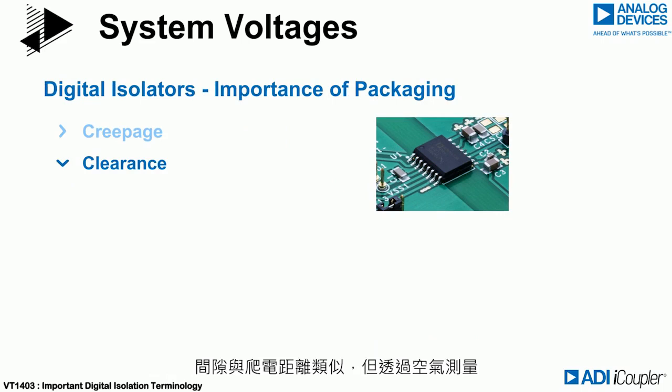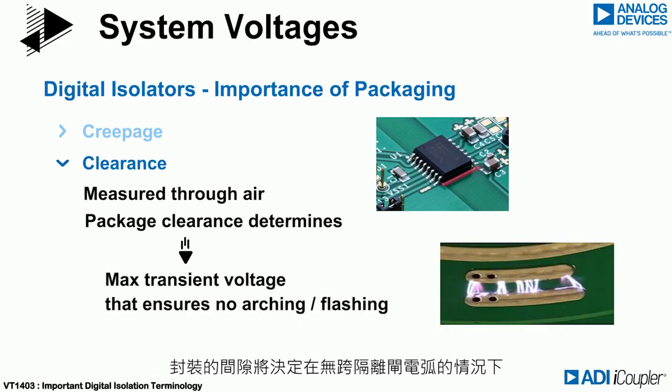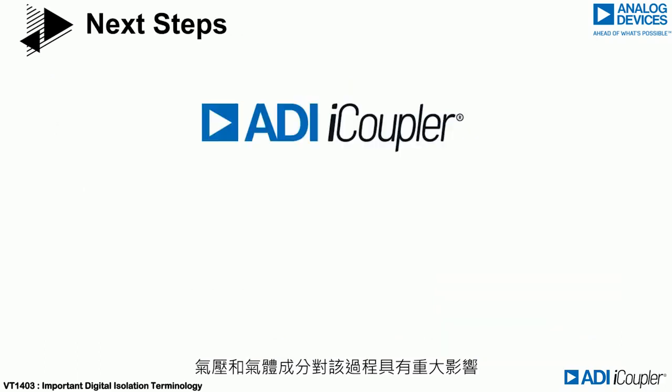Clearance is similar, but is measured through the air. The clearance of a package will determine the maximum transient voltage that may be applied without arcing across the barrier. Air pressure and gas composition have a major impact on this process.